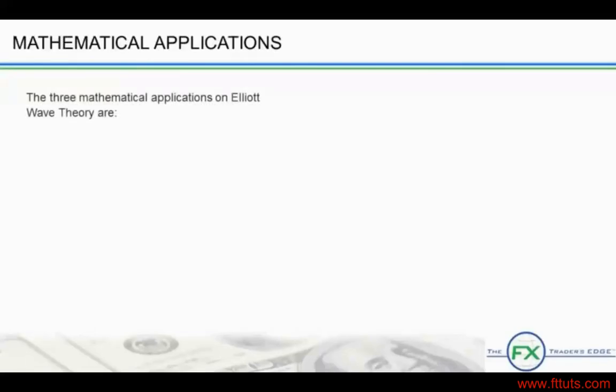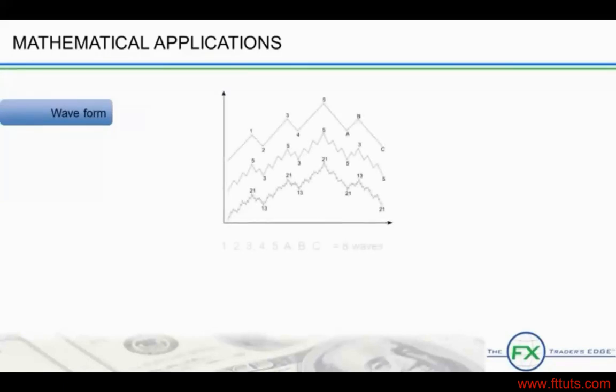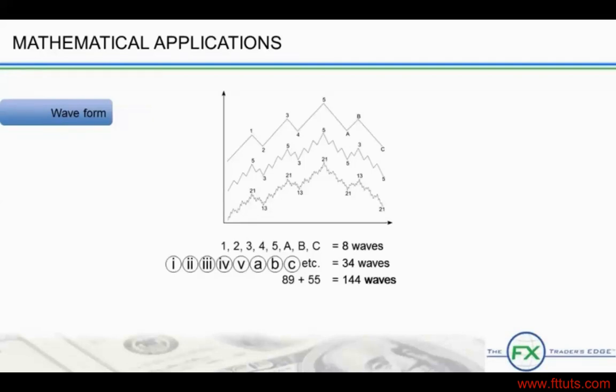To review, the three mathematical applications on Elliott Wave Theory is comprised of wave form. Fibonacci numbers are found in Elliott Wave Form. How do we use Fibonacci numbers in Elliott Wave Analysis? We have discussed that the basic five wave impulse and three wave corrective always subdivide into Fibonacci numbers. One complete cycle has eight waves and subdividing further, the next cycle has 34 waves followed by 144 waves.